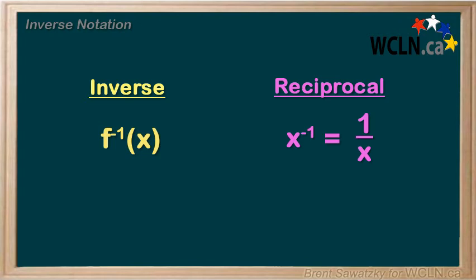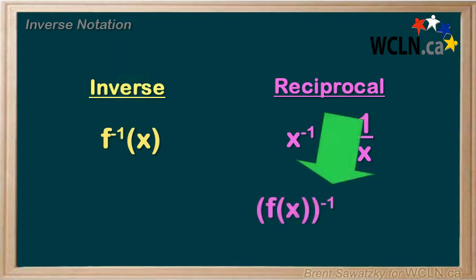For an inverse, the negative 1 fits right in between here. For a reciprocal, the negative 1 would have to be outside of it. And usually we put brackets to make sure it's perfectly clear.